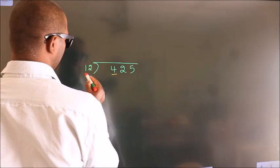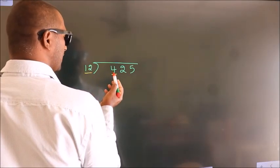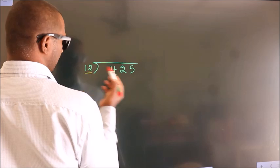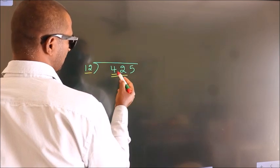Here we have 4. Here 12. 4 is smaller than 12, so we should take two numbers: 42.